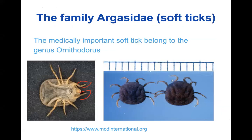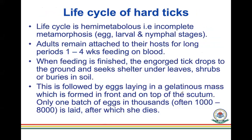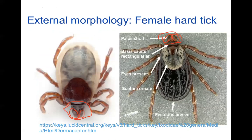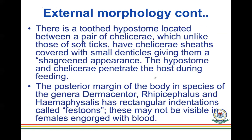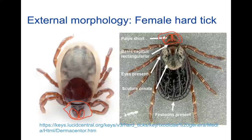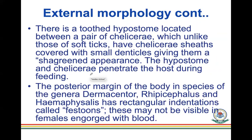In contrast, soft ticks have no visible capitulum — the head is invisible from the dorsal view. The soft tick skin appears wobbly and soft, while hard ticks have much harder, stronger-looking cuticle. There is also a hypostome located between a pair of chelicerae, and in hard ticks the chelicerae are covered with small denticles giving them a rough, shagreen-like appearance.